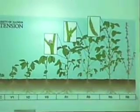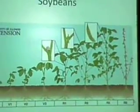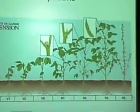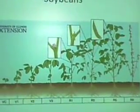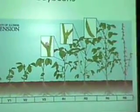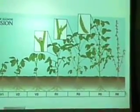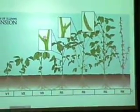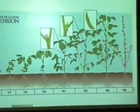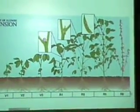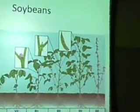And then we have our R5, where it's beginning to seed and the pods are starting to fill. And then our R8 is when they change colors, and you can tell that it's matured because the color just changed. Alright, that's our soybeans.